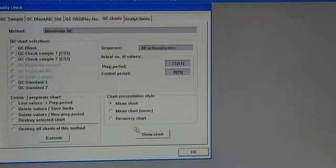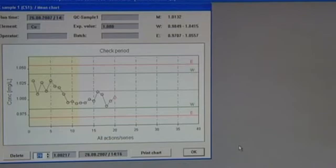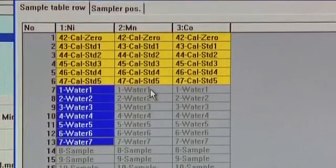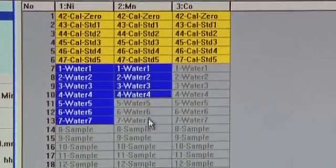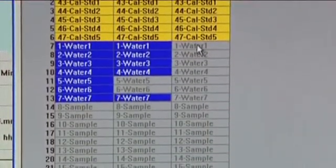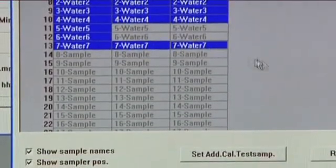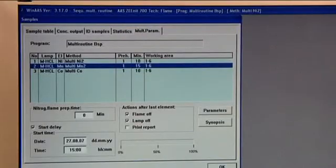Individual element methods for a sequential multi-element routine can be combined for determining several elements in one series of samples. With that, the desired elements are processed fully automatically, one after the other. Since the next lamp is already preheated, there is no waiting time when changing from one element to the next.